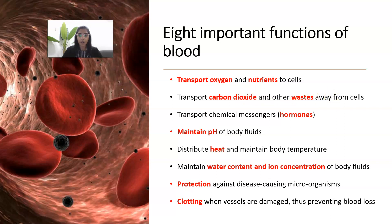Blood will also transport chemical messengers such as hormones, which we'll discuss more in Year 12. It maintains the pH of body fluids, since cells must have an optimum pH so that enzymes work effectively. Blood also maintains body temperature by distributing heat carried within it, and it maintains the water content and ion concentration of body fluids.